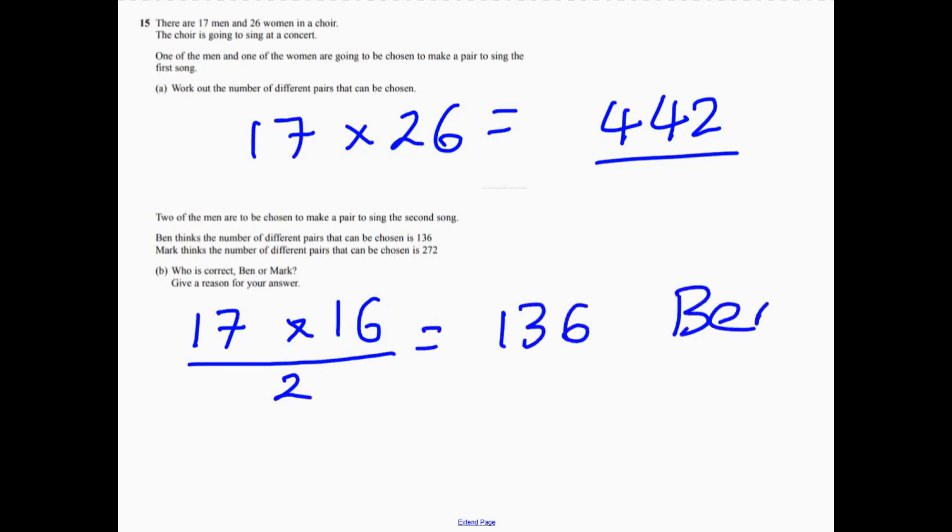The reason that we're dividing by 2 is if you think, let's imagine we've got person A, person B. Well, Mark is counting the other way around to be like a different pairing. But it's the same pairing. It doesn't matter, does it? So that's why we've got to divide it by 2. Otherwise, you're going to count each one twice.